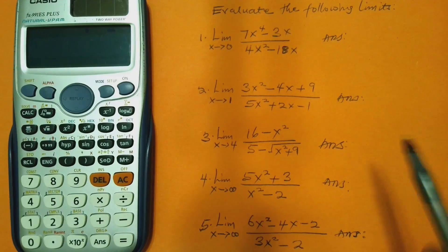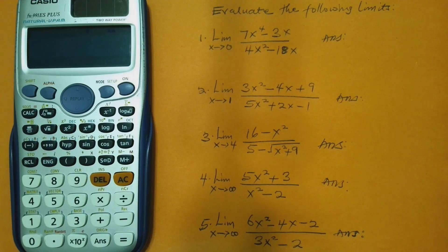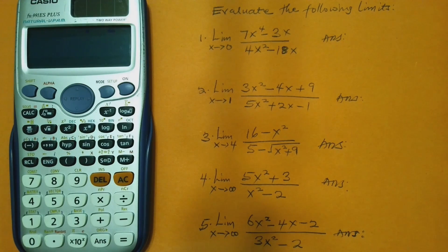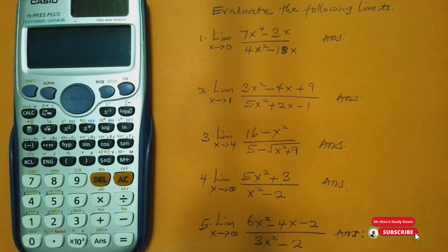So we take the very first question. The first problem says: the limit of 7x⁴ minus 3x, all over 4x² minus 18x, as x approaches zero. The most important thing here is that we are going to enter the function the exact way we see it in the question on the calculator. Remember, step one says we put in the function without the limit sign, so that is what we're going to do.